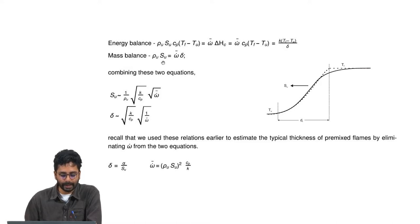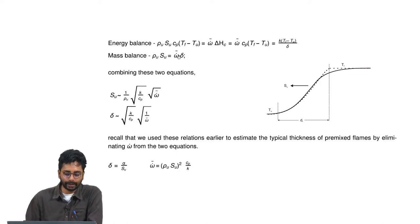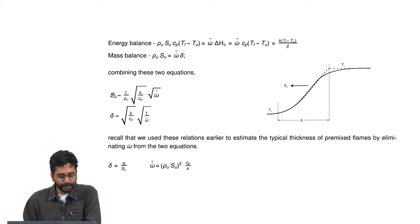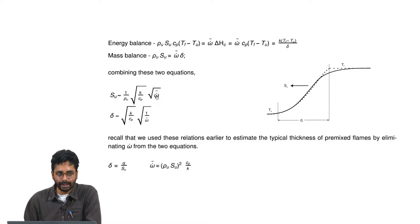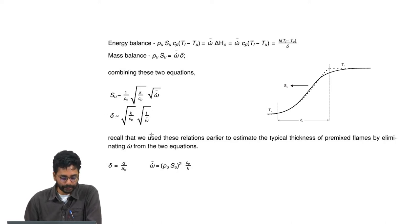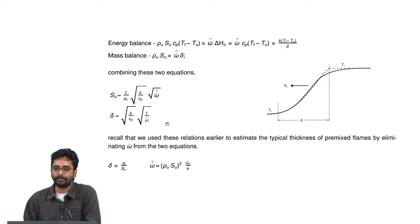Combining these two equations — which have two variables, flame speed and flame thickness — you can derive a relationship between flame speed and reaction rate, and between thickness and reaction rate. The flame speed goes as the square root of the overall reaction rate: Su ~ √(k/Cp) · √ω̇, and the thickness of the flame goes as 1/√ω̇.